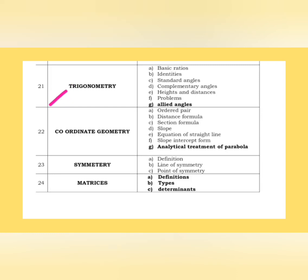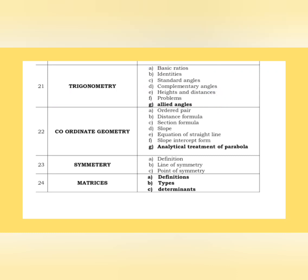From trigonometry: basic ratios, identities, standard angles, complementary angles, height and distance problems, allied angles. Except allied angles, the entire part is covered in previous videos. Coordinate geometry: symmetry, ordered pair, distance formula, section formula, slope, equation of straight line, slope-intercept form, analytical treatment of parabola, line of symmetry, point of symmetry. Matrices: the entire chapter is covered — definition, types and determinants — with more numericals to follow.